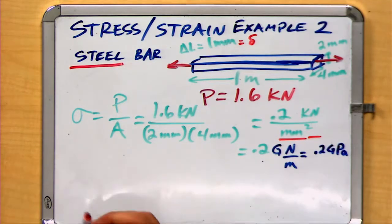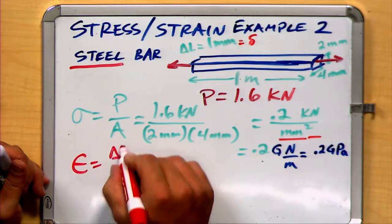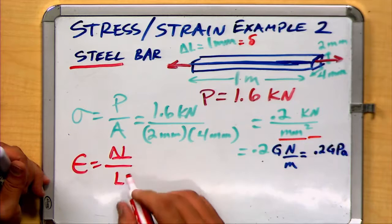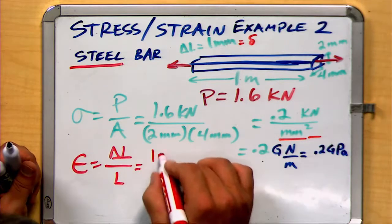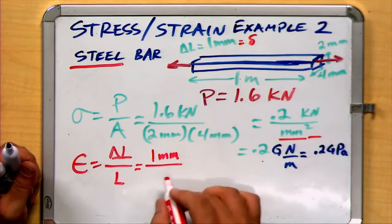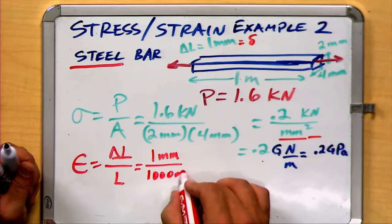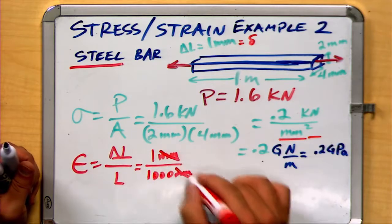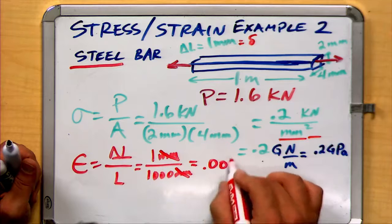Now let's calculate the strain. Our strain is our change in length divided by the initial length, which we see is 1 millimeter divided by 1 meter, or 1,000 millimeters. The millimeter cancels out, and we get a strain value of 0.001.